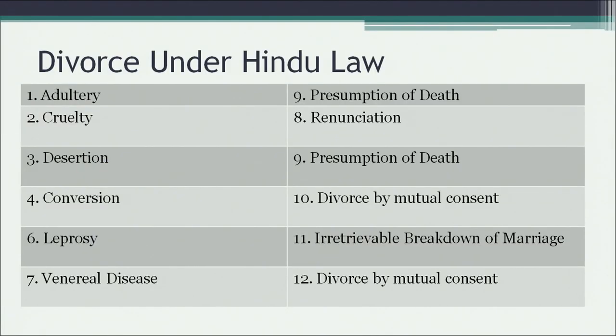The first ground is adultery — either the husband or wife must not have a sexual relationship with any other person outside the marriage. The second ground is cruelty, which may be physical or mental. Any kind of mental or physical torture by either party — by the wife to the husband or by the husband to the wife — is a common ground for divorce available to both.